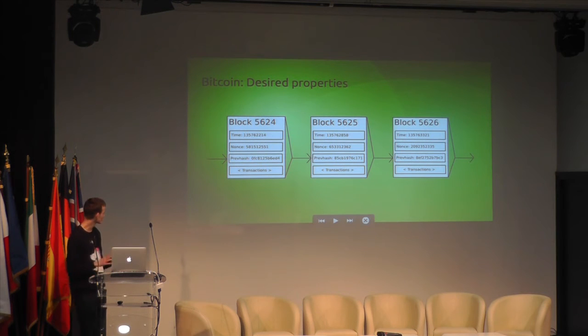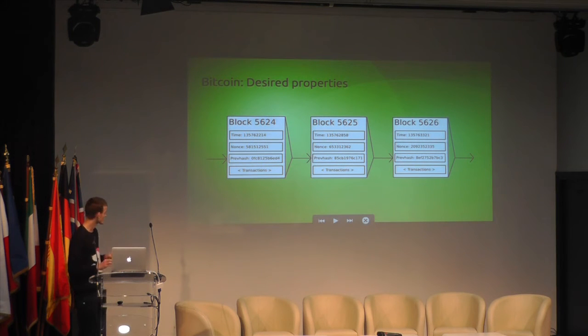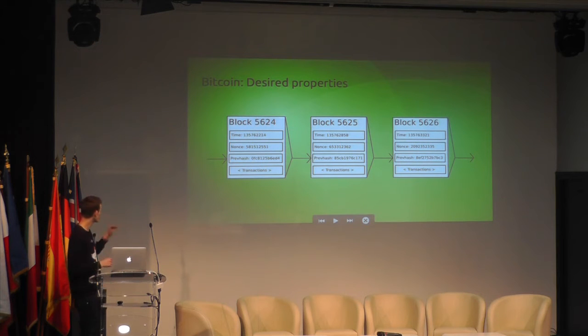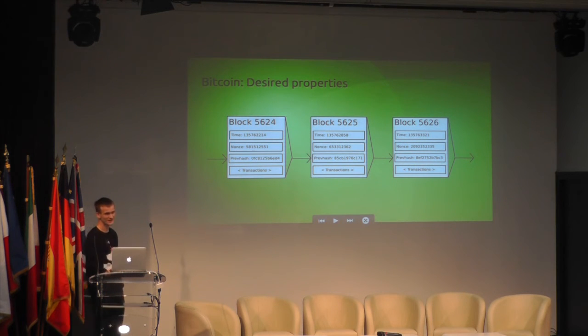This is what a blockchain looks like. You have timestamps, you have nonces. In the real world, the previous hashes have 32 bytes, not six bytes. And transactions.